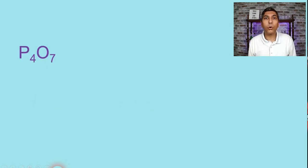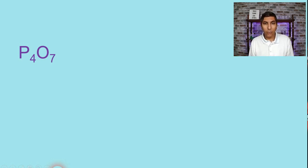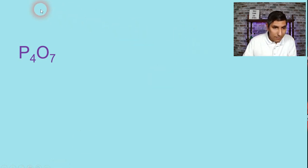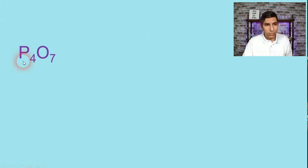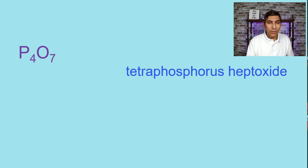Let's try P4O7. As we look at this compound, we notice it's not ionic — phosphorus and oxygen are both non-metals on the right side of the periodic table. So we name this using numeric prefixes, like we learned for molecular compounds. P is phosphorus, and there are four of those — tetraphosphorus. O is oxygen, changed to oxide, and there are seven — heptoxide. The answer is tetraphosphorus heptoxide.